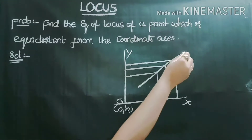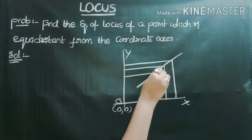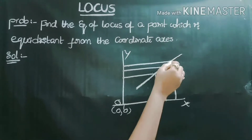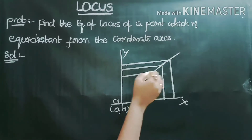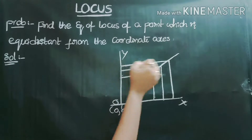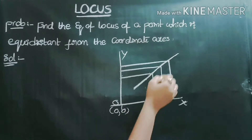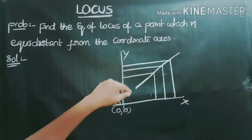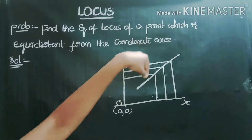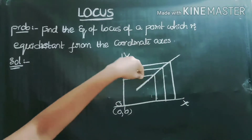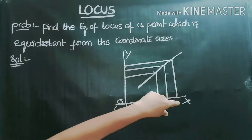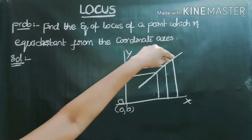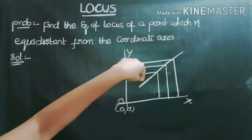Now, joining all these points — this is the locus of all points which are equidistant from the coordinate axes. These are all the points equidistant from the coordinate axes, and we want to find the equation of this locus.